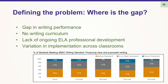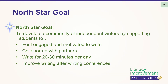Any improvement project starts with defining the problem — the gap between where we are and where we want to be. The first gap was around writing performance: SBAC data revealed at least half the students weren't meeting proficiency. In addition, there was no writing curriculum in place in the two partner schools or the majority of county schools, a lack of ongoing professional development to support writing instruction, and wide variation in curriculum implementation across classrooms.